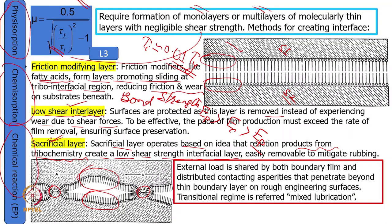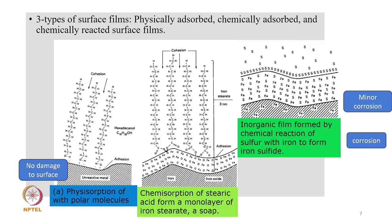In the mixed lubrication situation, external load is shared by both the boundary lubricant and contacting asperities. In a few places the thin boundary layer is also penetrated — that is why we use the word 'mixed lubrication': at some places metal-to-metal contact occurs, and at other places a boundary layer is present. We need to account for both in the situation.